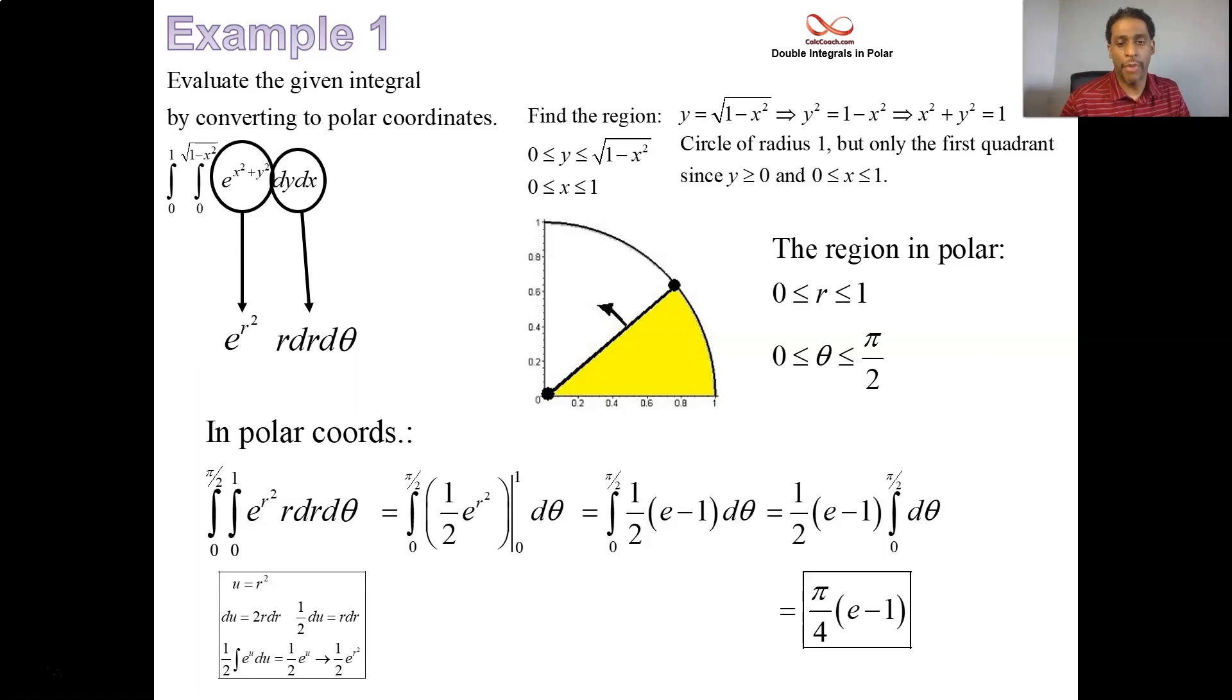So altogether, pi over 4, e minus 1. And that's your first double integral. Great job. Let's do another.